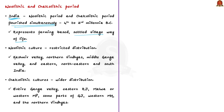Both Neolithic and Chalcolithic cultures in India represent a farming-based settled village way of life, but the Chalcolithic represents a more developed stage. Neolithic cultures have a comparatively restricted distribution — confined to the Kashmir valley, northern Vindhyas, middle Ganga valley, eastern India, northeastern India, and south India — whereas Chalcolithic cultures have a much wider distribution, found in the entire Ganga valley, eastern Rajasthan, Malwa region, parts of Gujarat, western Maharashtra, and the northern Vindhyas.